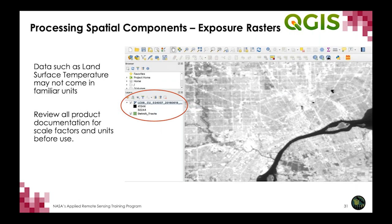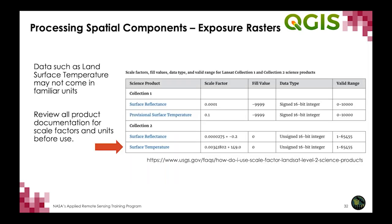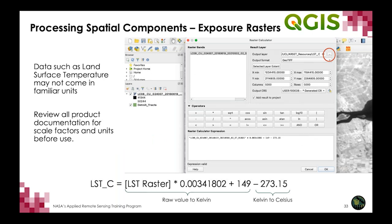Now let's begin processing our exposure rasters. We'll start by loading the land surface temperature data downloaded from Earth Explorer. You'll notice the units are not what we'd expect, so we need to convert using a scale factor as detailed in the product documentation — I recommend doing this for any remote sensing product you use. For the Landsat ARD surface temperature, we multiply by the scale factor 0.00341802 and add 149 using the raster calculator tool in QGIS. This produces degrees Kelvin; to convert to Celsius, subtract 273.15.